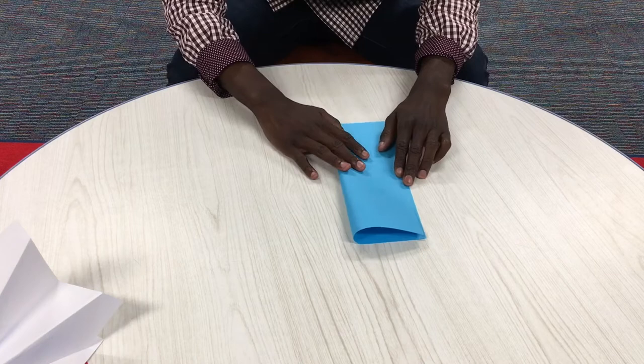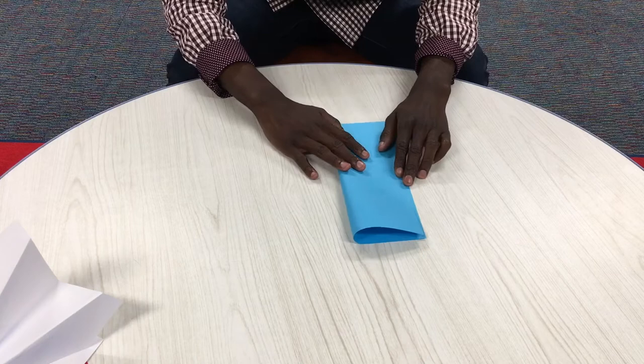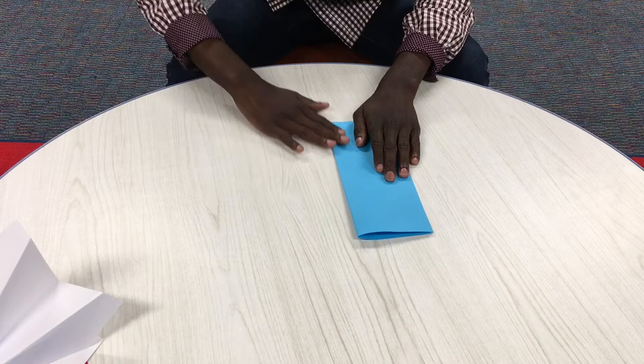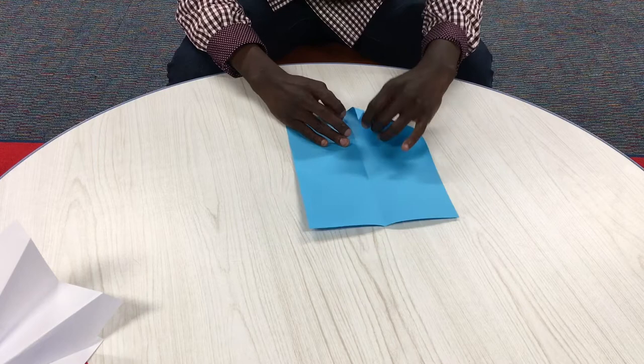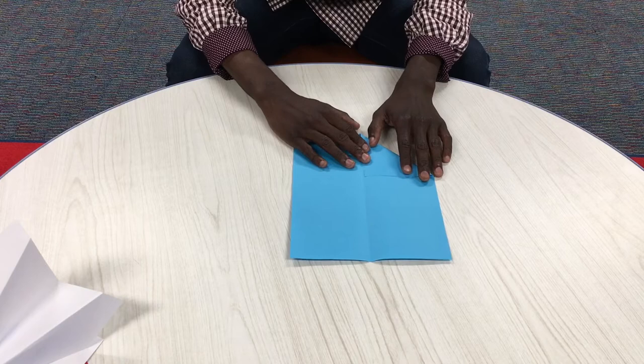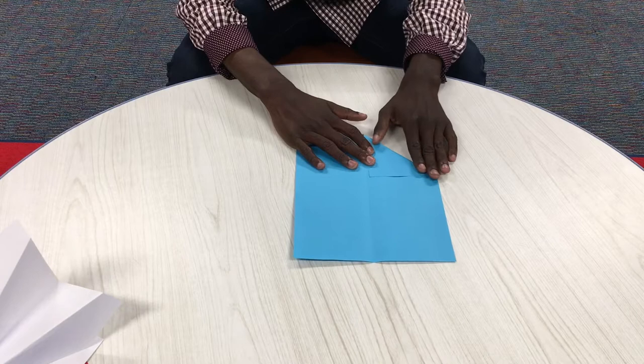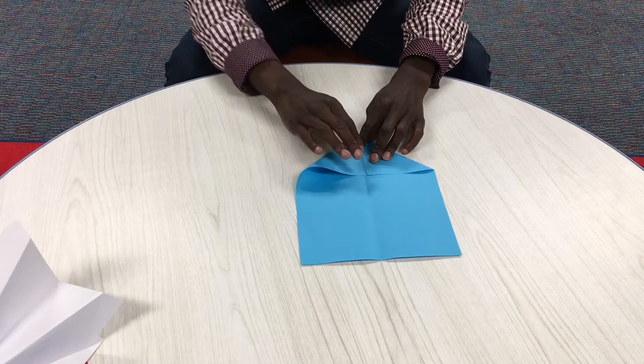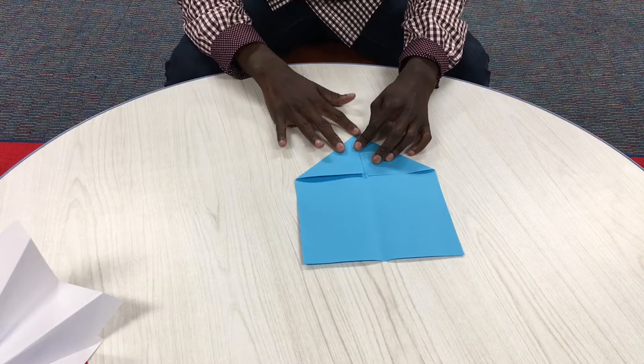We're going to fold it with this first, just nice and evenly. That's the first step. And then next, what you want to do is fold in the corners, right degree angle, right where the fold is, but not too into the fold, just right here. Get that good fold. Same with the next corner.